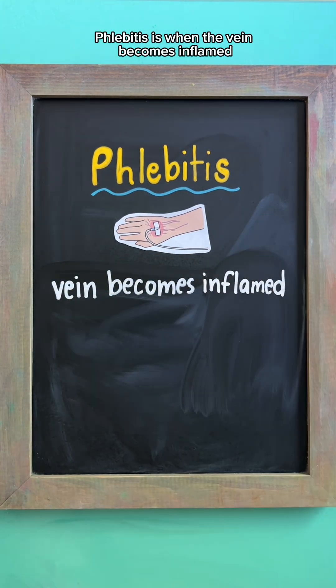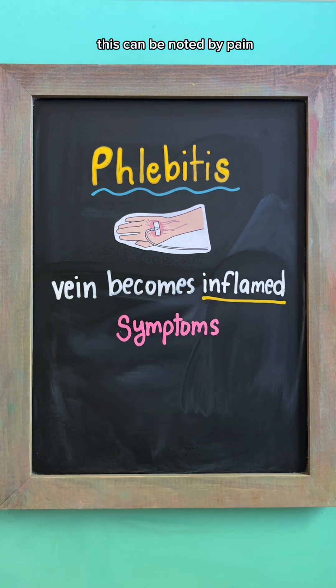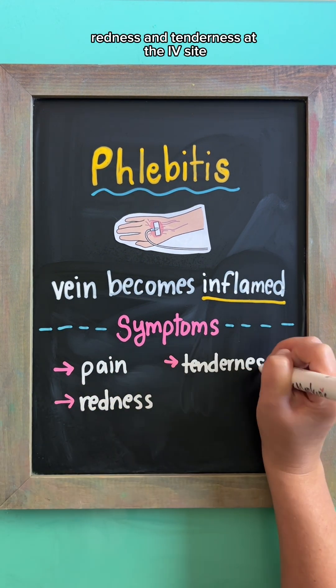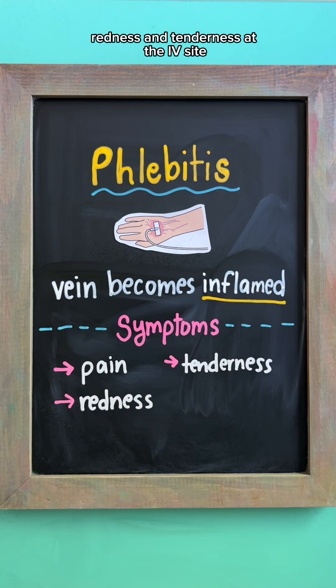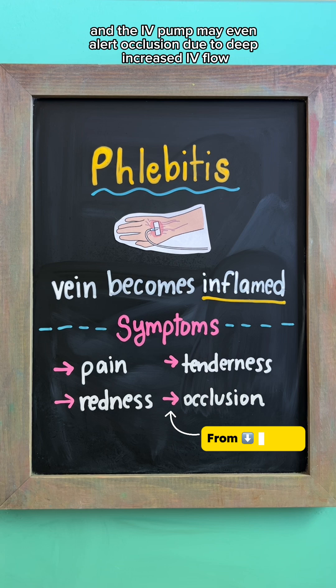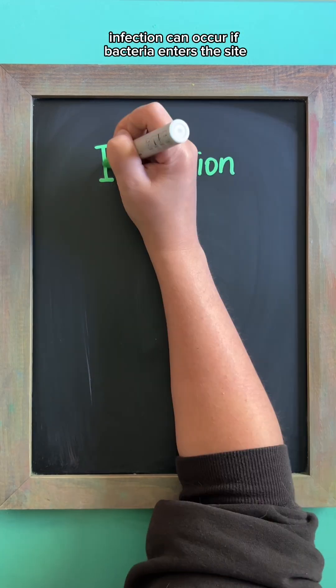Phlebitis is when the vein becomes inflamed. This can be noted by pain, redness, and tenderness at the IV site, and the IV pump may even alert occlusion due to decreased IV flow.